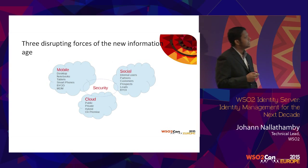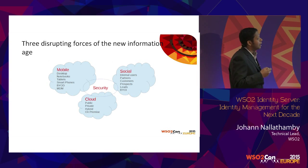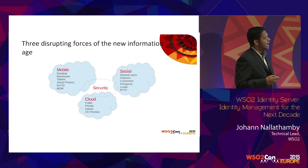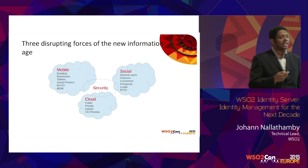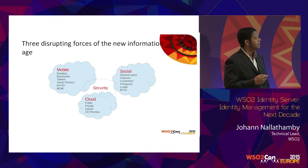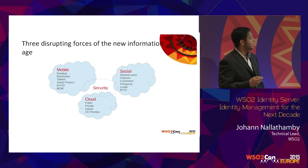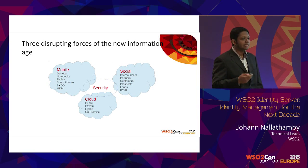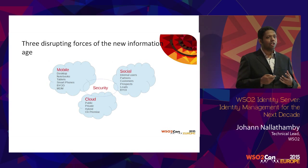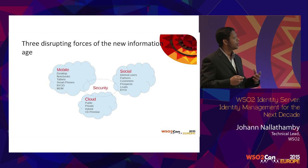There are three disrupting forces right now in the information security space: mobile, social, and cloud. All three bring their own challenges to security. When we say mobile, we are talking about the various different devices that connect to any identity provider — mobiles, desktops, notebooks, tablets. The problem is these devices are not in your control; you don't own the device, it's outside your control.